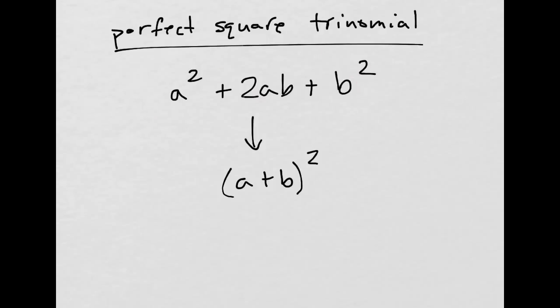Here are the steps. If you have the third term, you can square root it, so you get regular b. Take the first term, square root it, you get regular a. And you multiply those together and times it by 2. If that gives you the middle term, then you can automatically rewrite your trinomial like that.